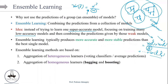Ensemble learning typically produces more accurate and more stable predictions than the best single model. Ensemble learning methods are generally based on two groups: aggregation of heterogeneous learners and aggregation of homogeneous learners. Heterogeneous learners means we're dealing with different models — SVM, decision tree, KNN, and so on. The idea is to work with the same dataset but apply different models and then aggregate the predictions: majority vote for classification, or average for regression.